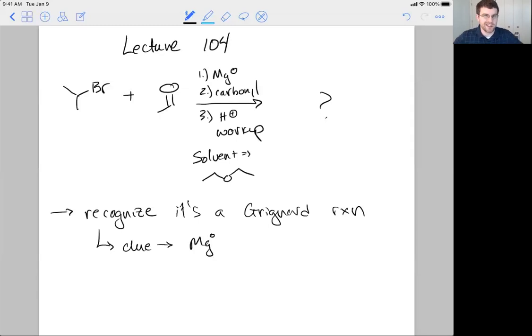This is another reaction of a haloalkane, but I didn't feel it was necessary to go and add this to that table of reactivity for SN1, SN2, E2, E1, that sort of thing. Because it's pretty clear, if you have magnesium zero, you're going to be doing a Grignard reaction and nothing else. Okay, so recognize it's a Grignard reaction with Mg0.